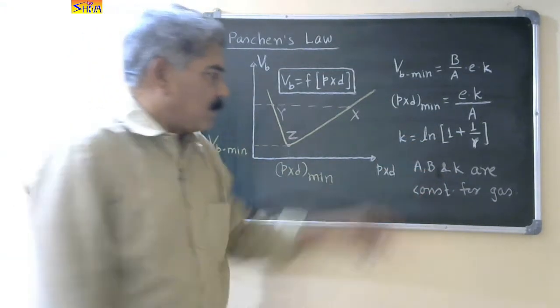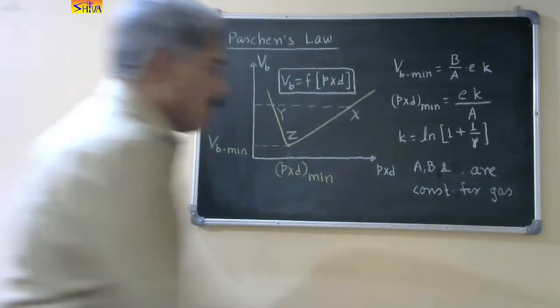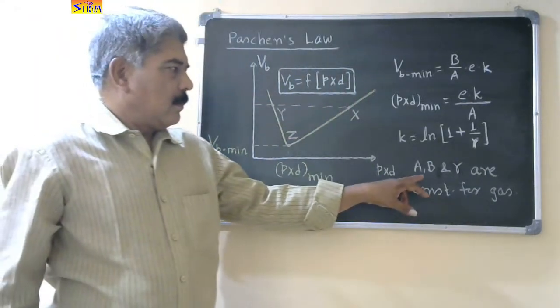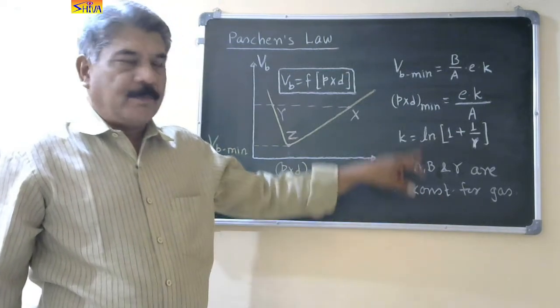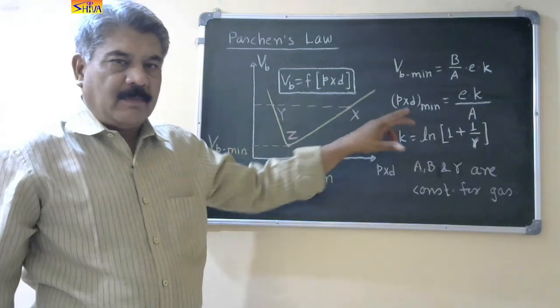So a, b, and I am sorry it is not k, it will be gamma. So if values of a, b and gamma are given, then we can compute what will be the value of Vb minimum and p into d minimum for a particular gas.